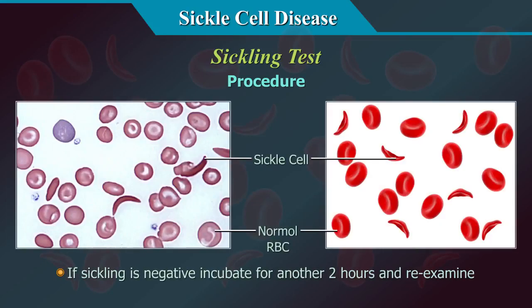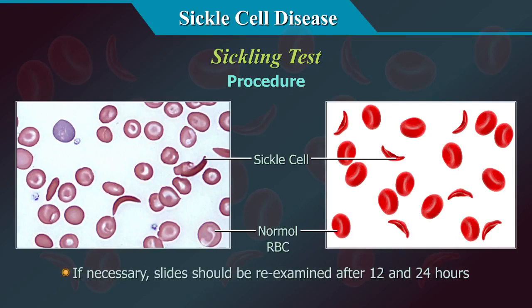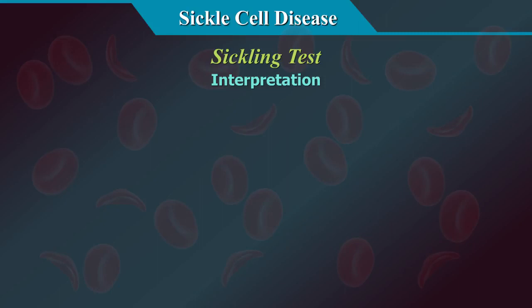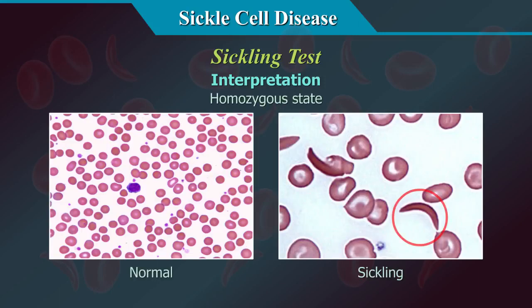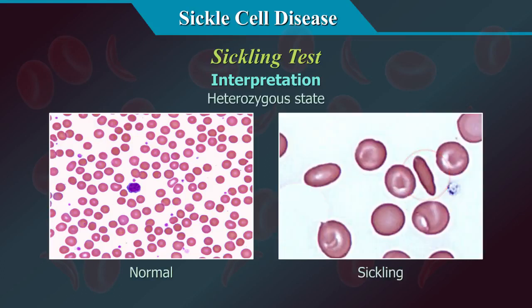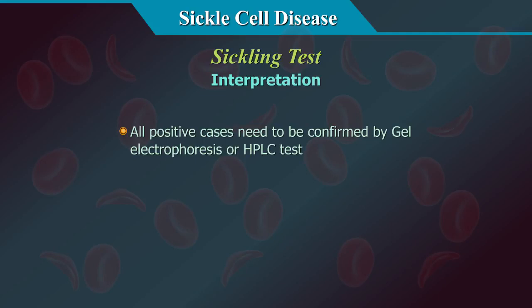If sickling is negative, incubate for another two hours and re-examine. If necessary, slides should be re-examined after 12 and 24 hours. Interpretation: in the homozygous state (sickle cell anaemia), HBS causes complete sickling of red cells when deoxygenated by reducing substances. In the heterozygous state (sickle cell trait), this phenomenon is less marked and holly leaf forms are more prevalent than the sickled form. All positive cases need to be confirmed by gel electrophoresis or HPLC test.